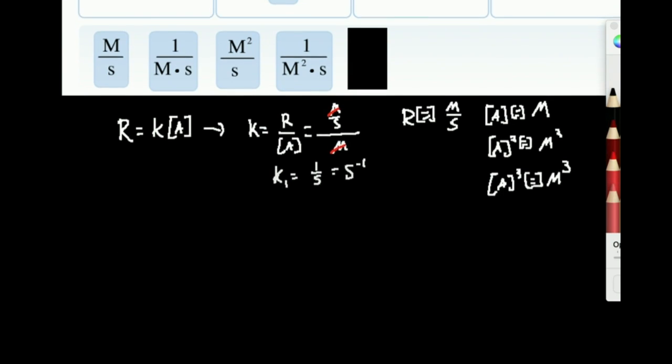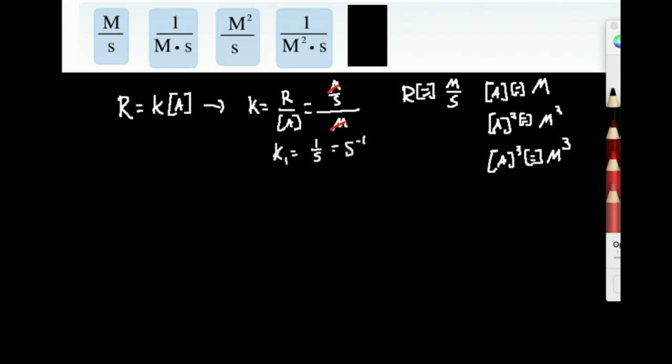So hopefully that makes sense. Let's do this for the other ones. We're now going to do second order. So I know that rate for a second order, and this was for the first order, K for a second order reaction is going to be A squared because it's second order. I'm going to do the same thing. Let's solve this for K2. When I solve for K2, I get rate over concentration of A squared. Again, plug in units. What are the units of rate? Molar per second. What's the units of A squared? Molar squared.